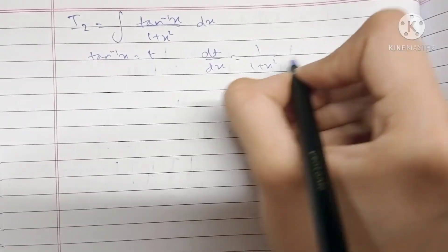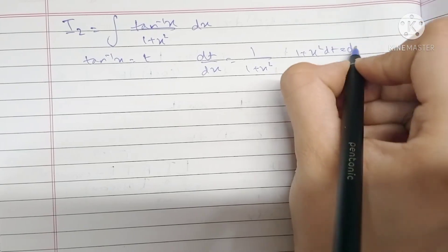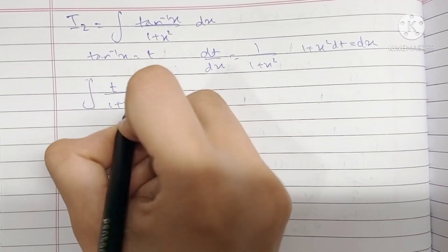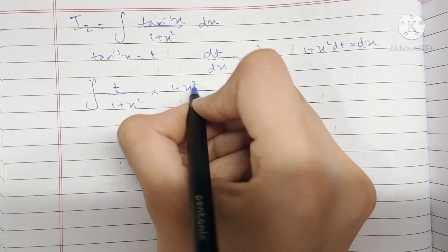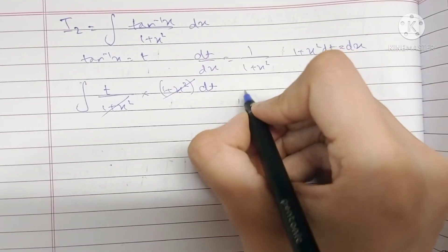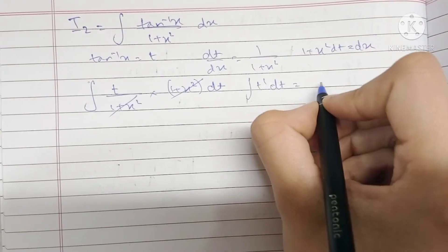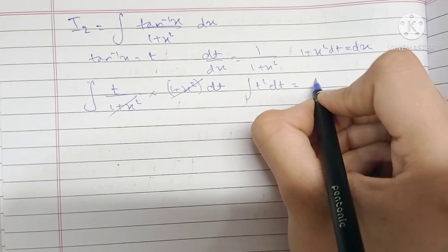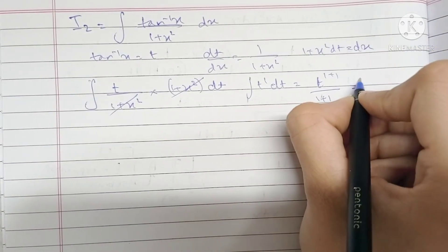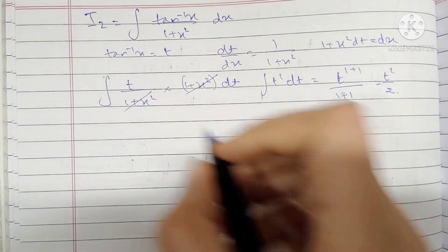So (1 + x²) · dt becomes dx. We have t/(1 + x²) · (1 + x²) dt — the (1 + x²) terms cancel. The integration of t¹ dt is t^(1+1)/(1+1) = t²/2.